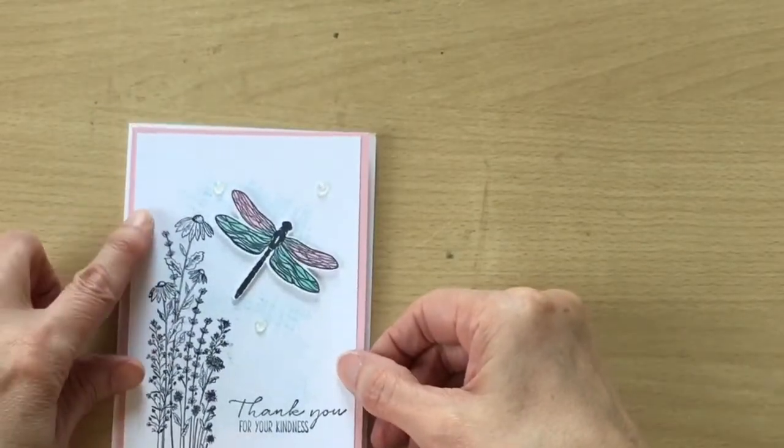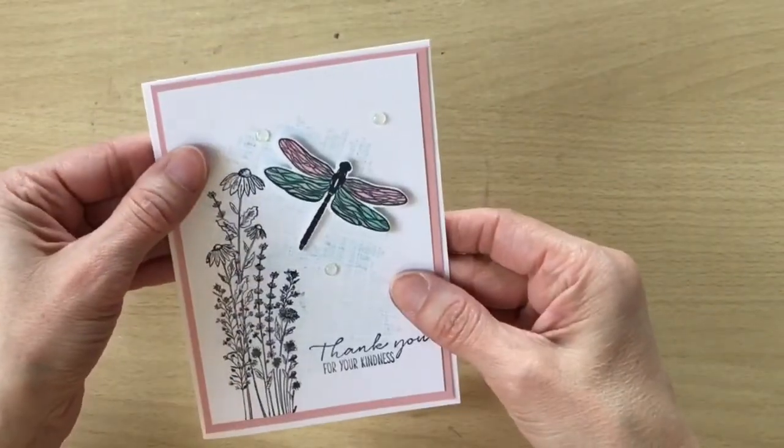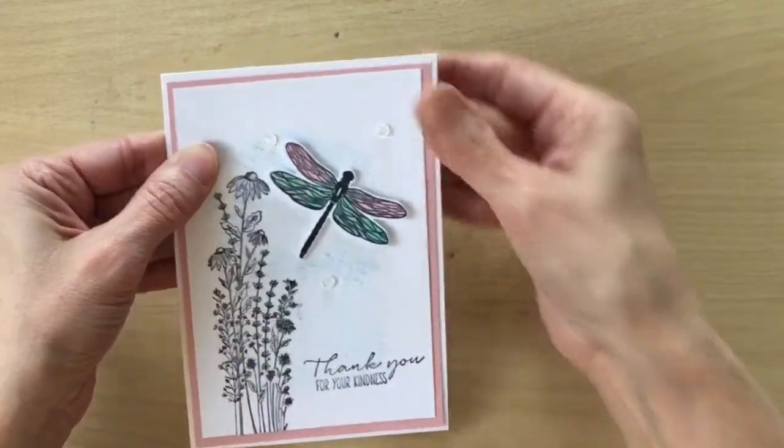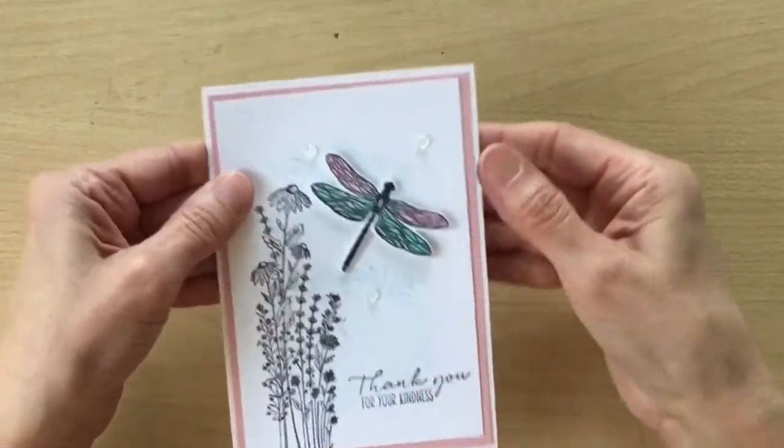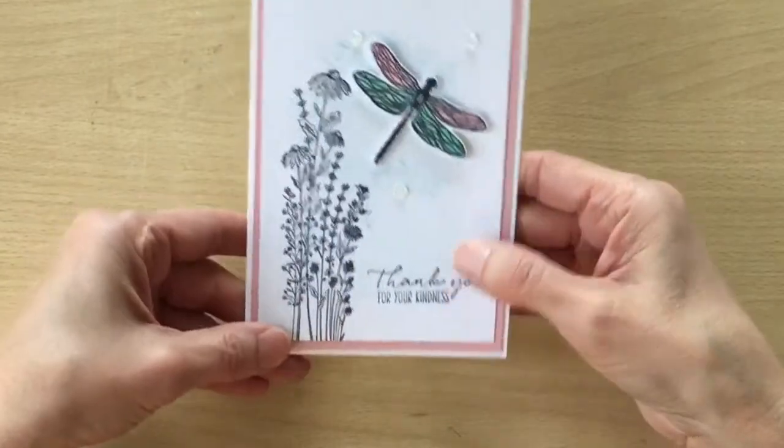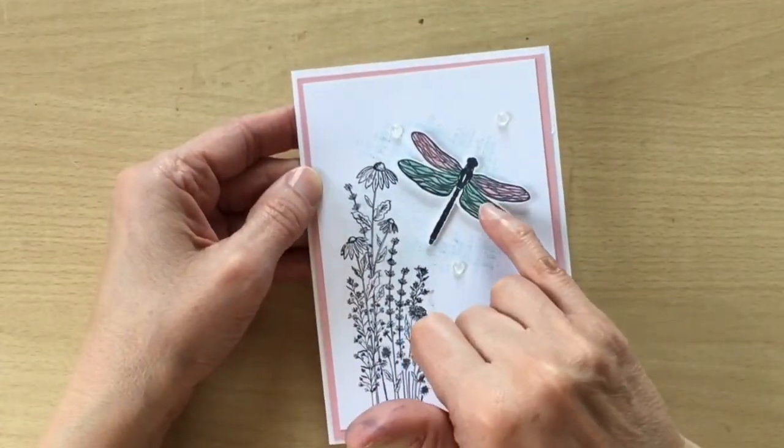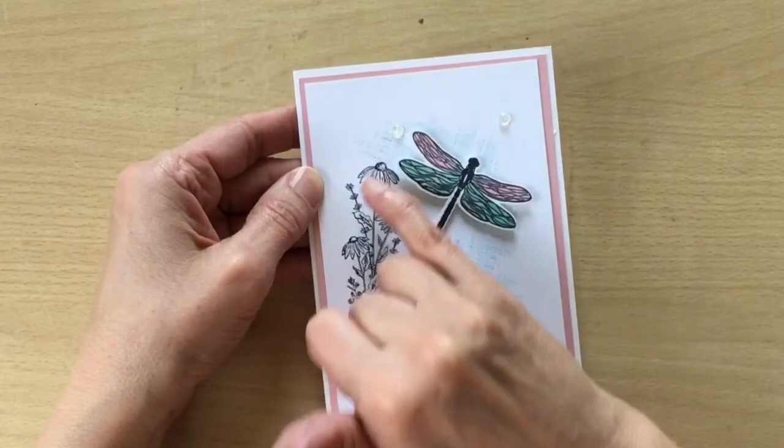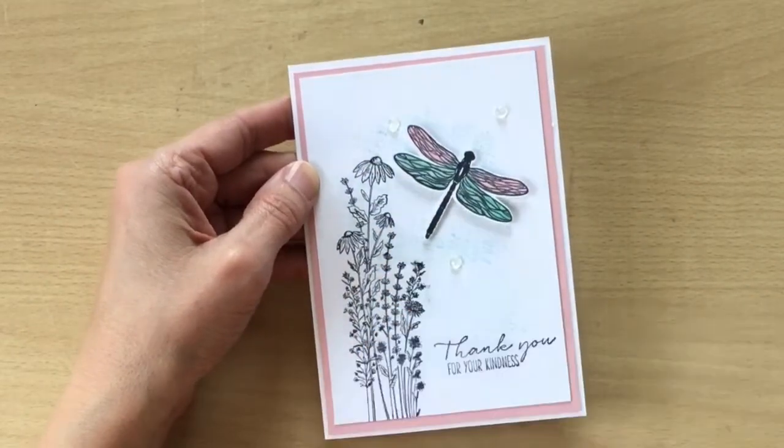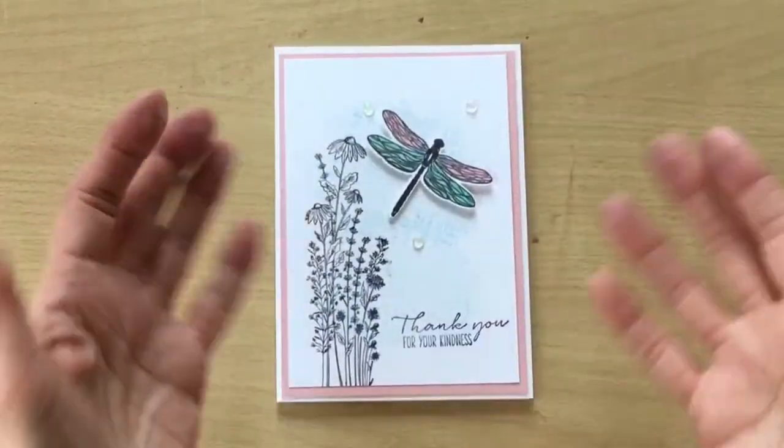And there we go. I'm just going to stick this. It is quite a subtle card. There's not a lot of colors but I'm quite liking it. You could even take some of the colors from the dragonfly and color in your flower there if you wanted a bit more color.